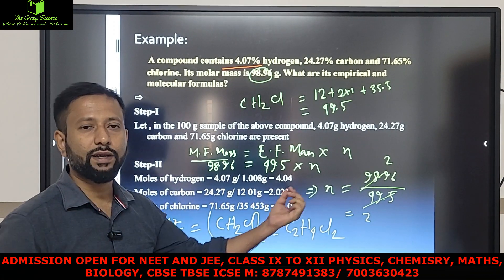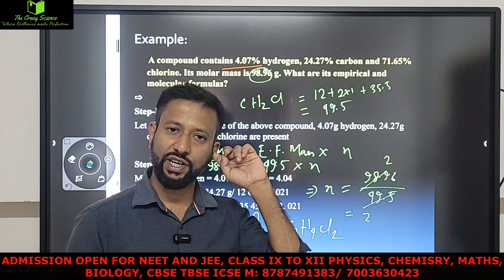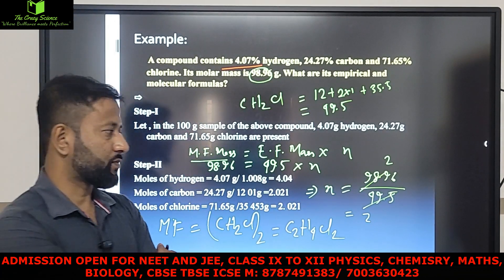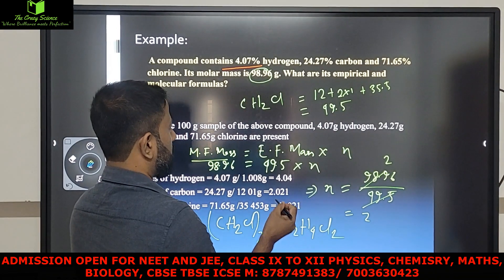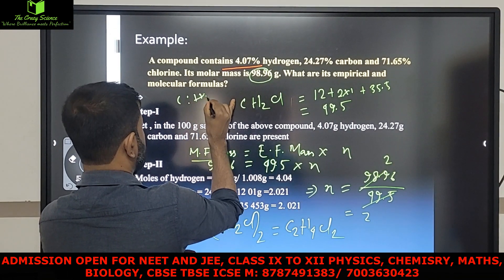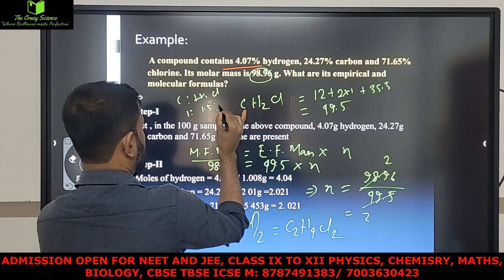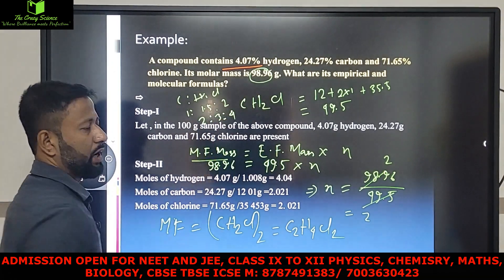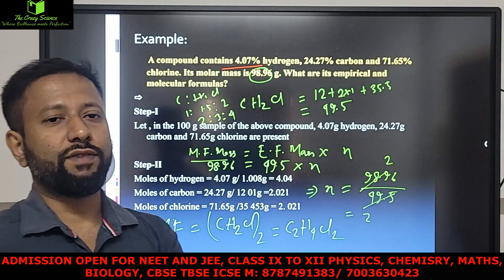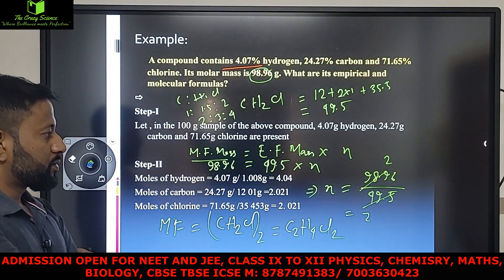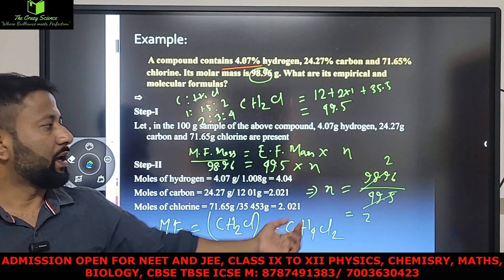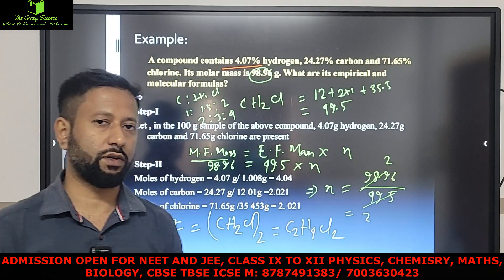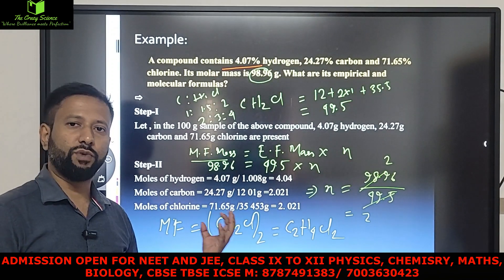One important thing to remember: if you get a fraction instead of a whole number, you double it to convert to a whole number ratio. For example, if the ratio comes out as 1.5 to 2, then doubling gives 3 to 4. After getting the moles, find the simple whole number ratio, then convert to the empirical formula, then get the index N, and finally write the molecular formula.